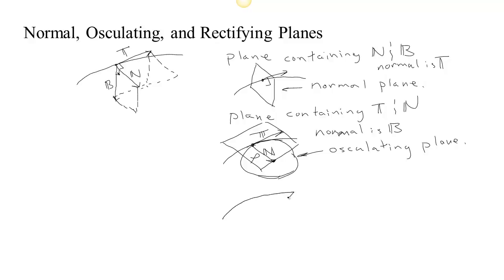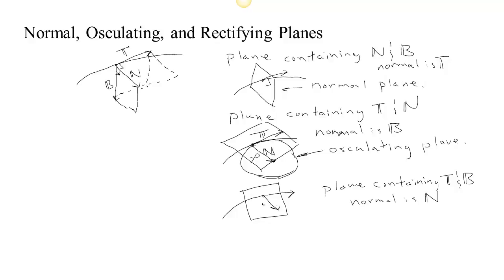The third plane is the one that contains T and B. The plane containing T and B has its normal equal to the unit normal N — so what's perpendicular to that plane is the unit normal N. We call this the rectifying plane.